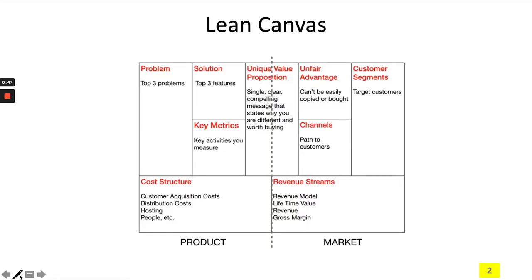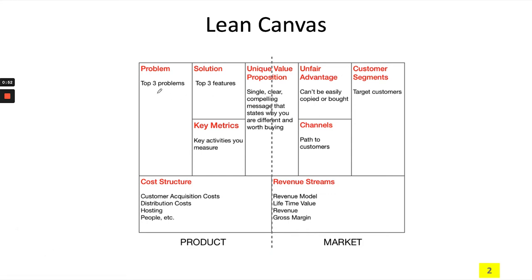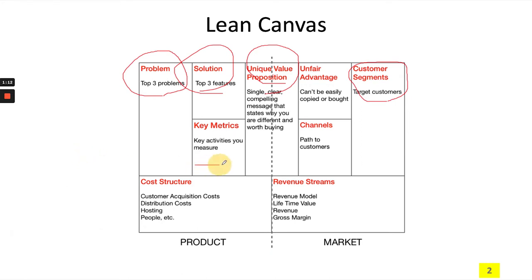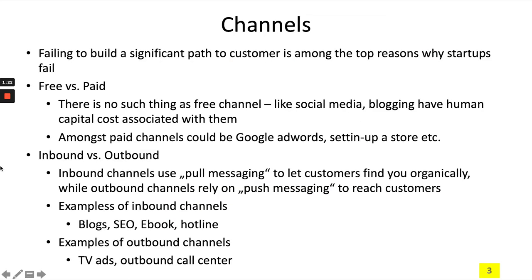Last week we defined in more detail the problem, customer segments, and solution, and why it is important to define why you are unique. Today we will look into key metrics, channels, revenue stream, unfair advantage, and cost structure. So let's start with channels.